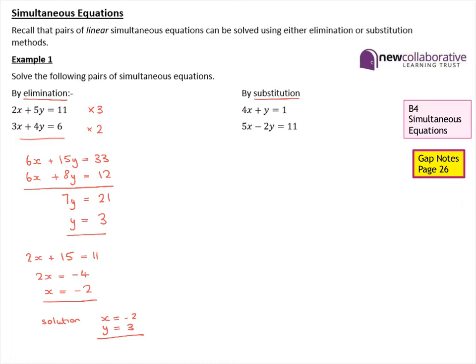In this example, if we take the first equation, it's relatively straightforward to rearrange it and make y the subject, so I'm going to choose that one to rearrange. If we now substitute that into the second equation — we've got 5x take away 2y, but we've just found that y equals 1 take away 4x — and that must equal 11. So we can now proceed and solve that equation to find our value of x.